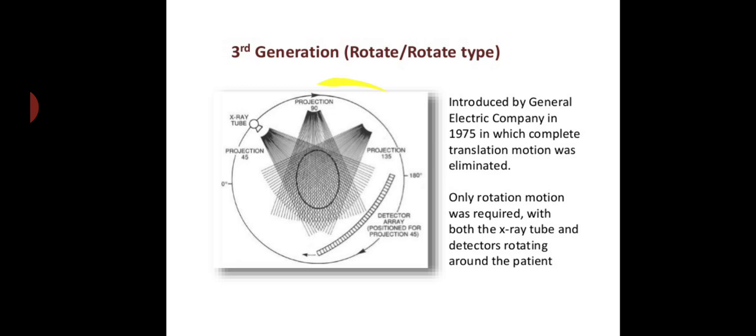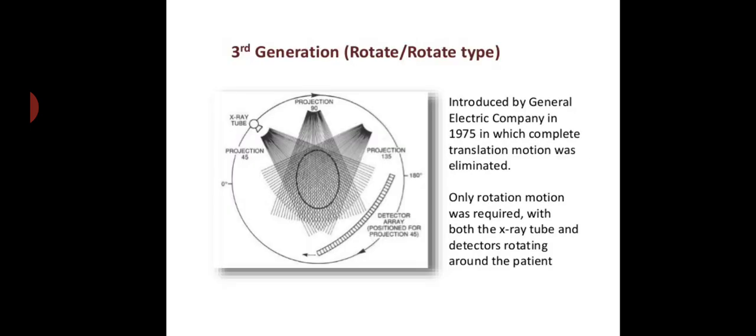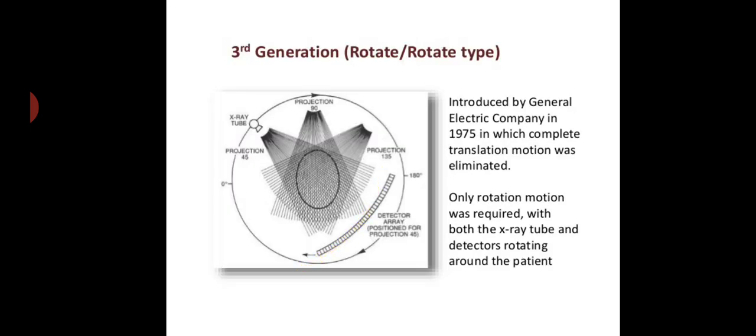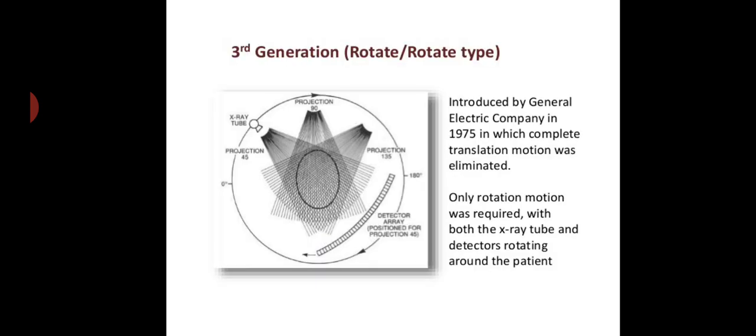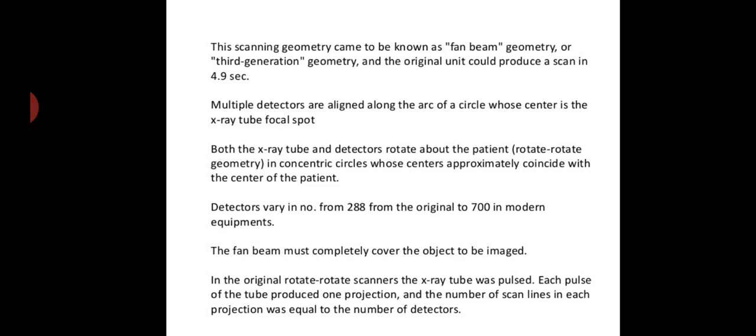Now let us talk about the third generation CT, whose example is given here. Introduced by General Electric Company or GE in 1975, in which complete translation motion was eliminated. Only rotatory motion was required with both x-ray tube and the detector rotating around the patient. So this is the patient, this is the x-ray tube, and this is the detector. They are both rotating.